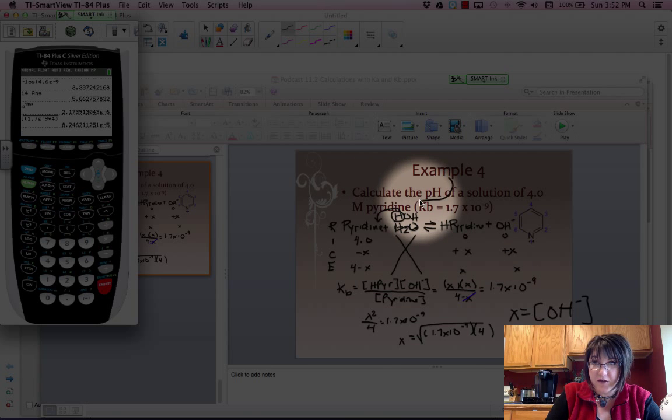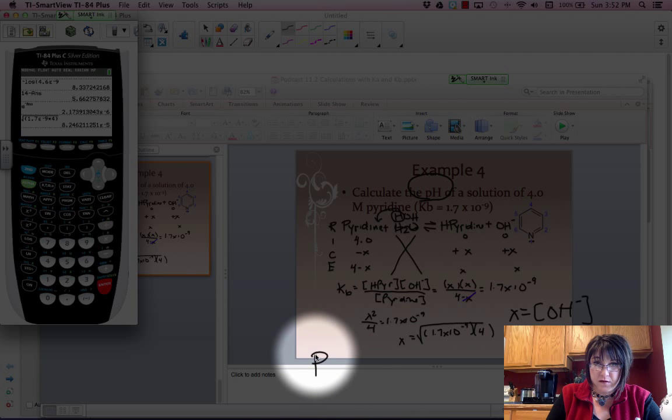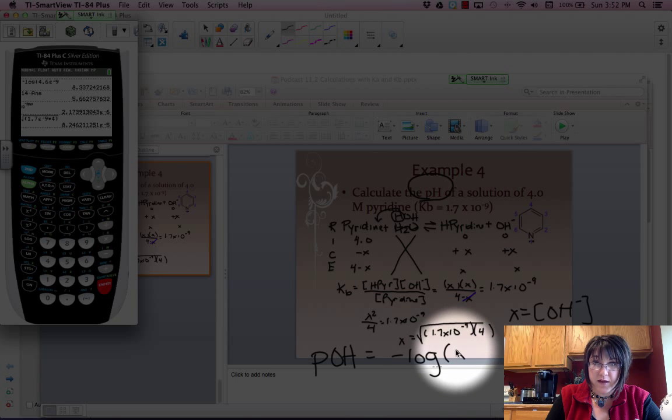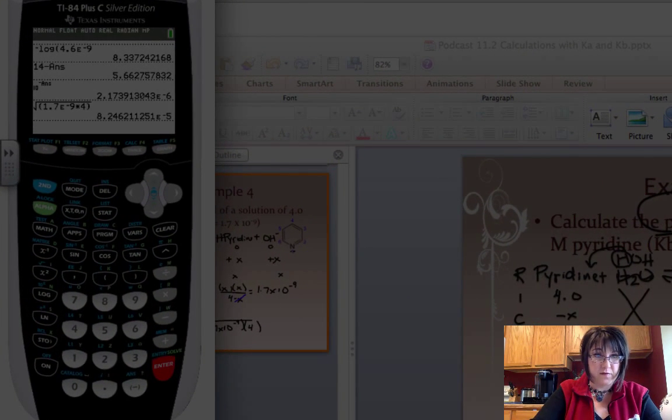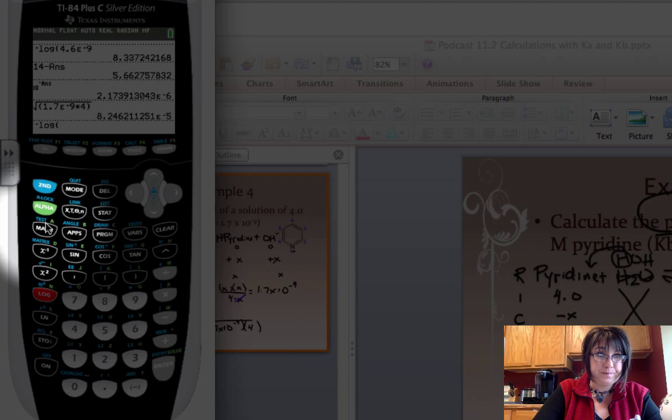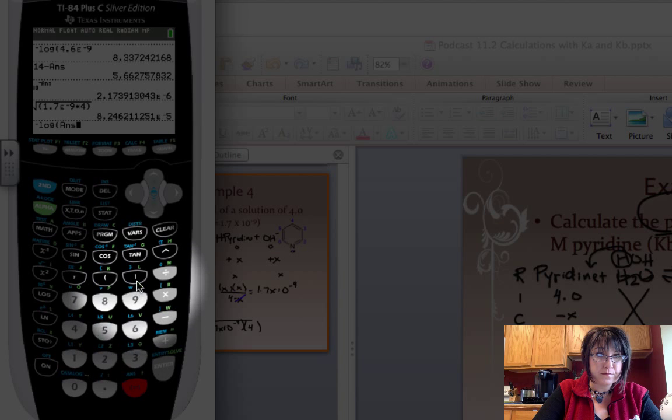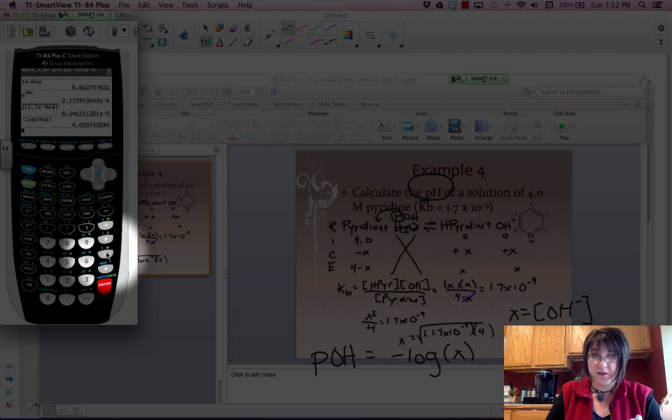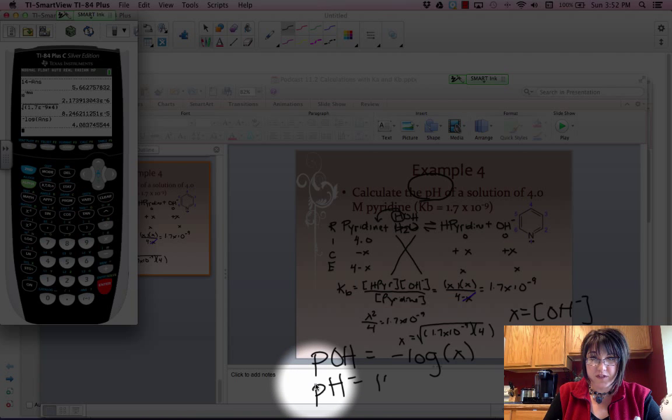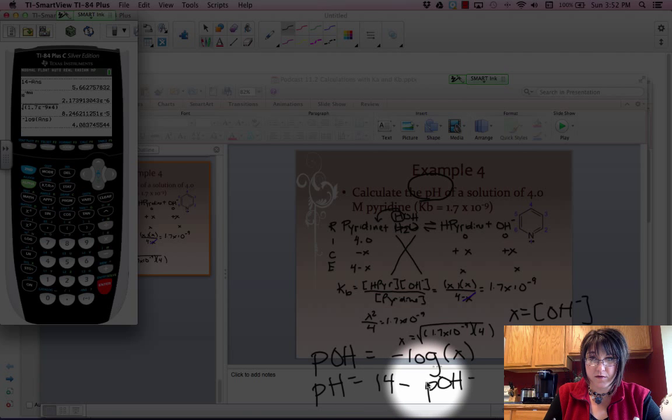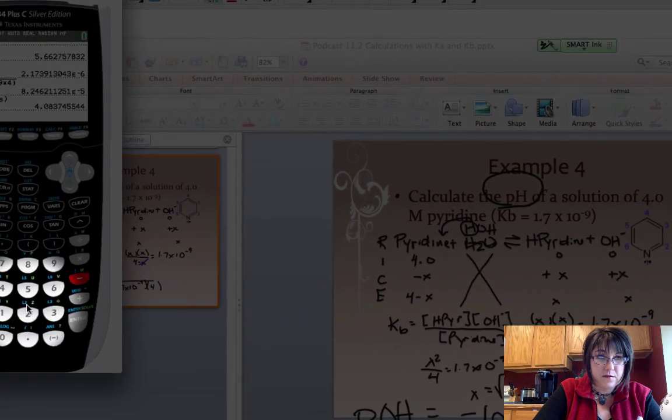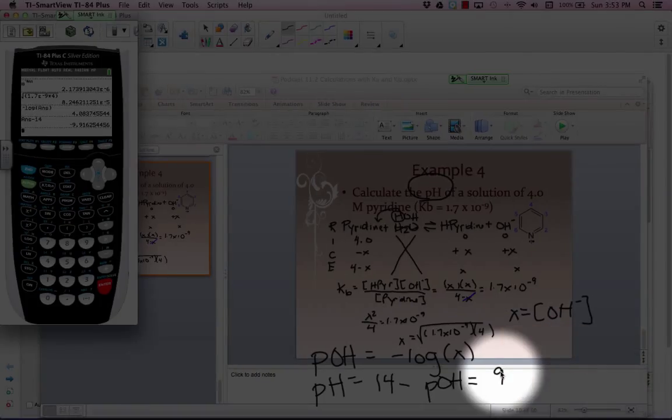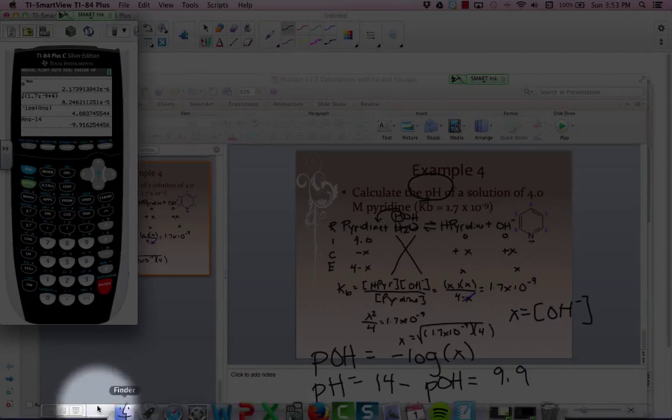I haven't answered the question yet. I need to calculate the pH. My next step is the pOH because I have hydroxide ion concentration. Let's take the negative log of my X, the negative log of my answer. And I get 4.08. I need to find the pH. So pH is 14 minus pOH. And I get pH is 9.9.